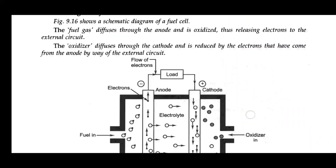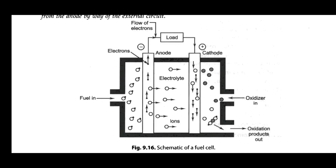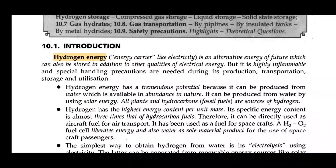This is a diagram. There is a box. There is a fuel inlet. There is no battery — there are two terminals, positive and negative. There is a bulb connected. There is an oxidizer. This represents the fuel cell diagram showing hydrogen energy input, terminals, and output.